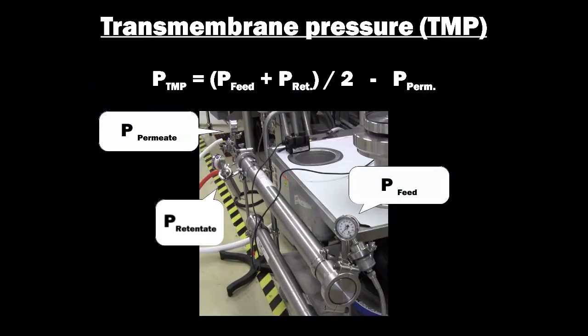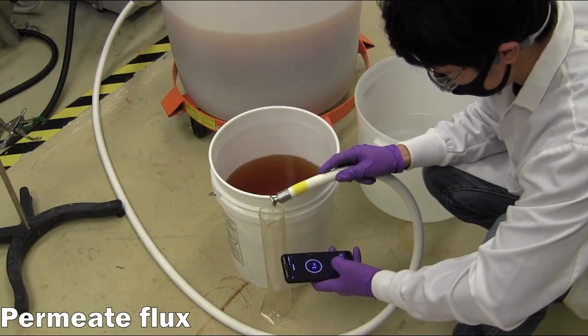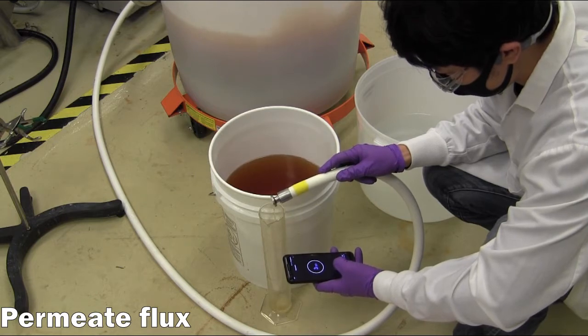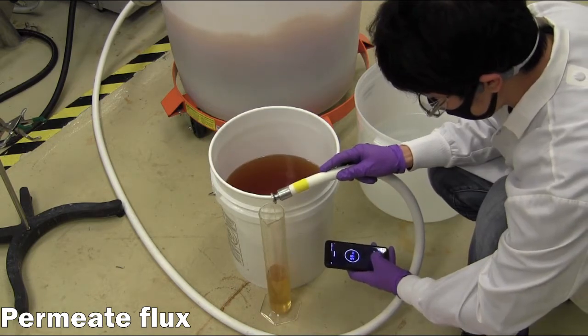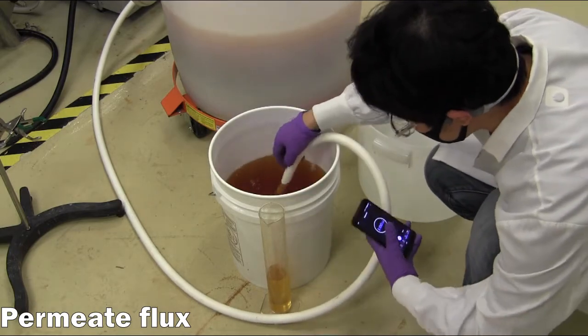The transmembrane pressure or TMP is the measured difference between the permeate stream and the cross flow stream pressures, the latter of which is calculated using the average of the feed inlet and retentate outlet pressures. This yields an effective measure of the driving force between the two sides of the membrane. Permeate flux will generally increase as the TMP is increased at the expense of increased accumulation of material that may ultimately lead to membrane fouling.